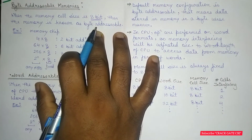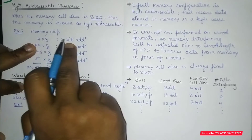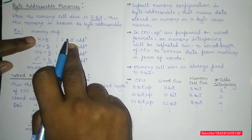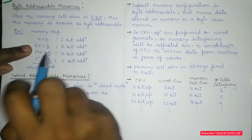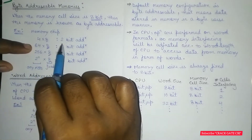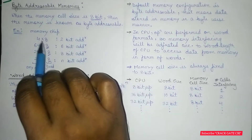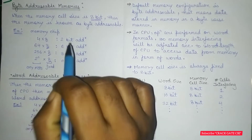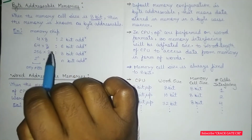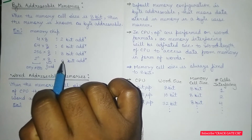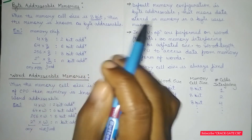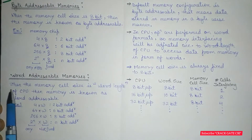Here we are having a 2-bit address because log base 2 of 4 is equal to 2. Similarly, log base 2 of 64 is 6. You can find out how many address bits are required for a given memory chip configuration. If the cell size is fixed to 8, it is byte addressable. If the cell size is not fixed, it will be known as word addressable.